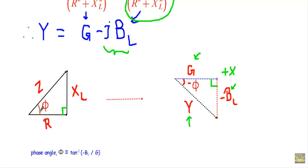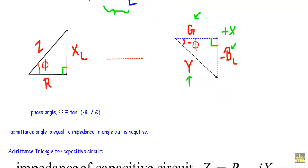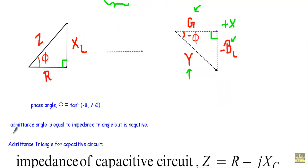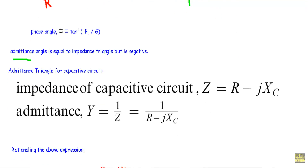In the impedance triangle, Z creates a positive angle φ with the reference axis. In the admittance triangle, φ is negative. The phase angle is calculated as φ = tan⁻¹(−BL / G). This admittance angle φ is equal in magnitude to the impedance angle φ, but the impedance angle is positive while the admittance angle is negative.